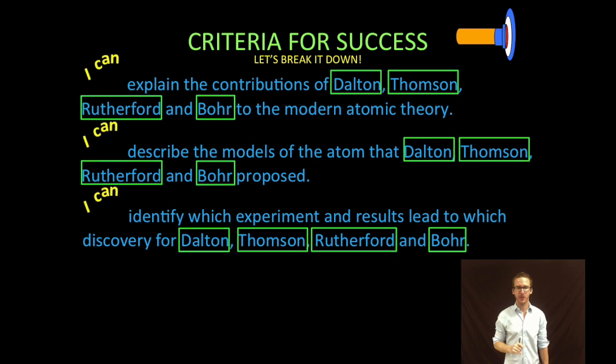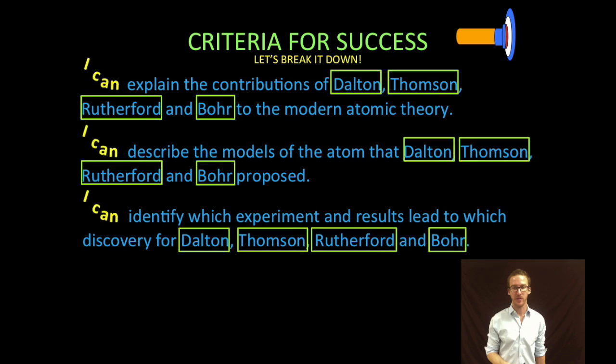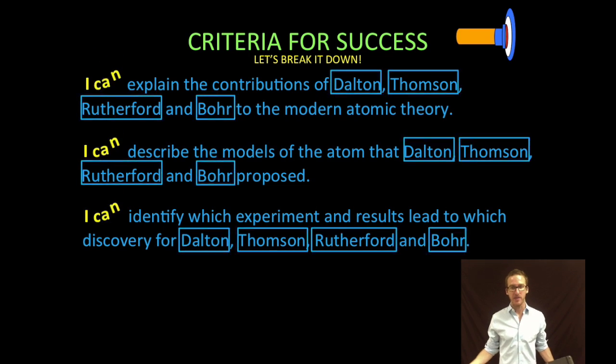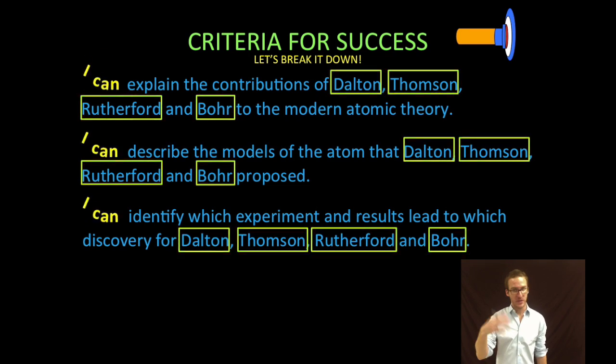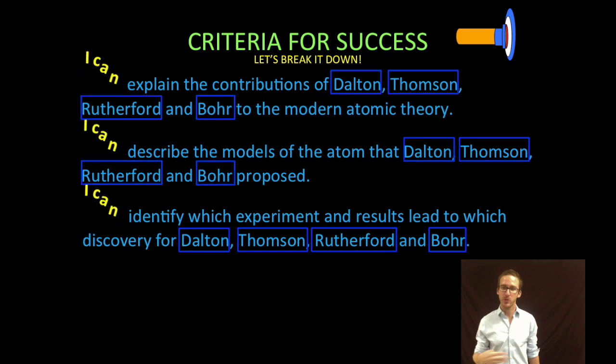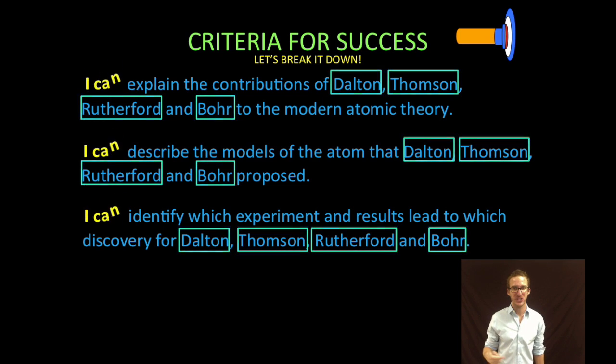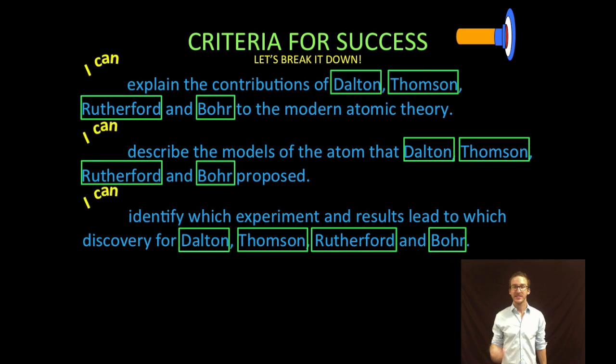First thing we're gonna do: explain the contributions of these four old dead people - Dalton, Thompson, Rutherford, and Bohr. How do they contribute to modern atomic theory? Our understanding of the atom. Two, describe the models of the atom that these four old dead guys proposed. And then number three, identify which experiment and results led to which discovery for those same thrilling four guys. Basically what did these guys do, Dalton, Thompson, Rutherford, and Bohr, to help us better understand the structure of the atom.